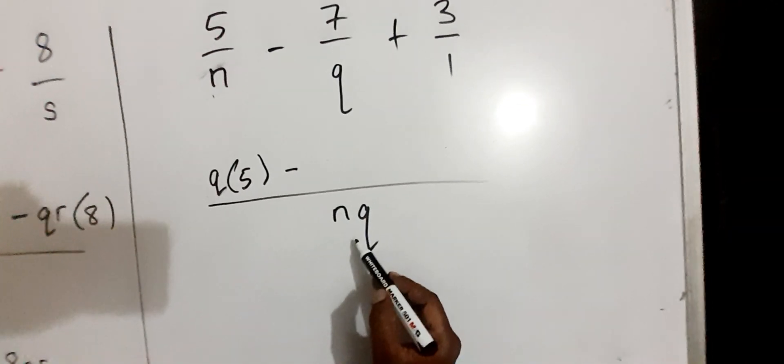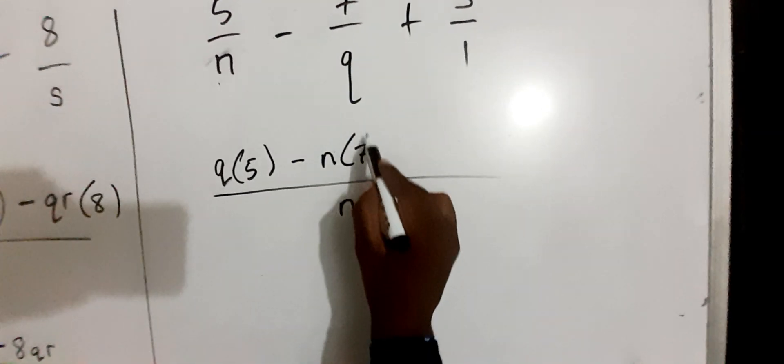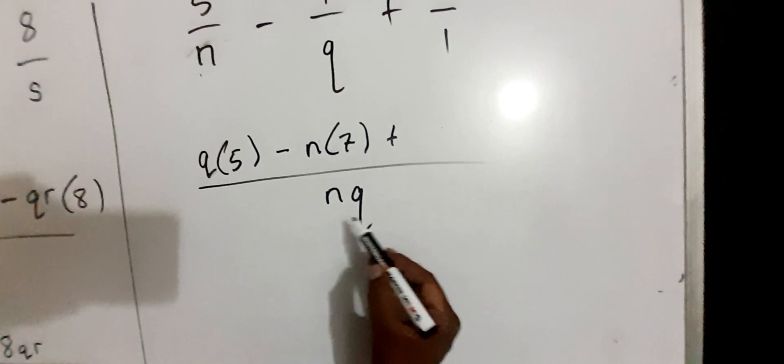Minus Q into NQ. The Q cancels with the Q, leaving us with N, then we multiply by the numerator, 7. Plus, then 1 into NQ is just NQ.